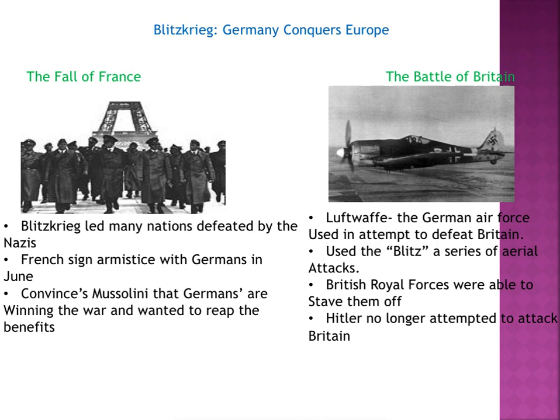They coupled that with the Blitz — a series of aerial attacks — and it really hurt Britain, killing about 40,000 British. But the British Royal Forces were able to stave them off, and eventually the bombing stopped. Hitler would no longer attempt to attack Britain. This proved to be probably one of the major losses for Hitler.